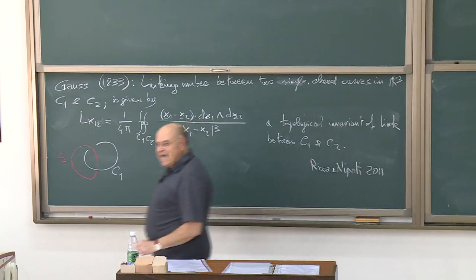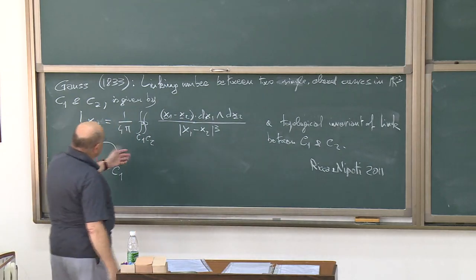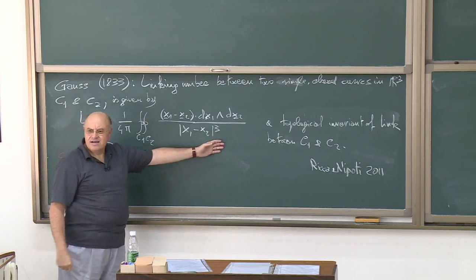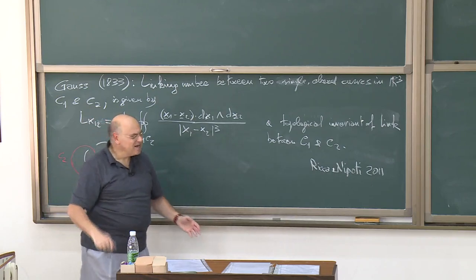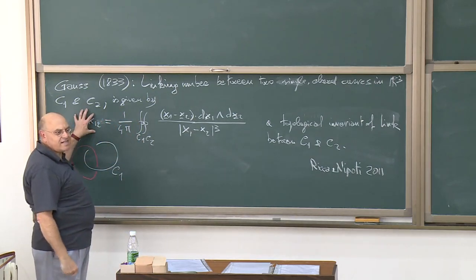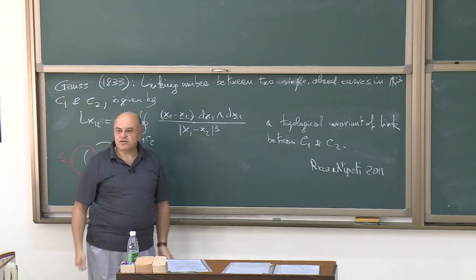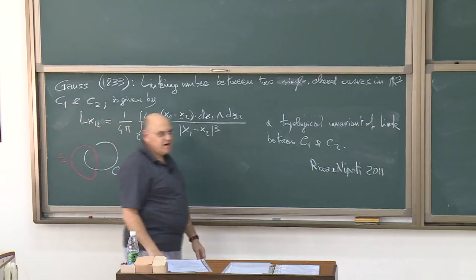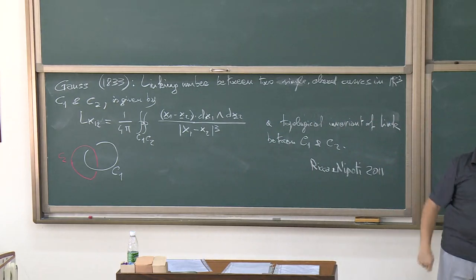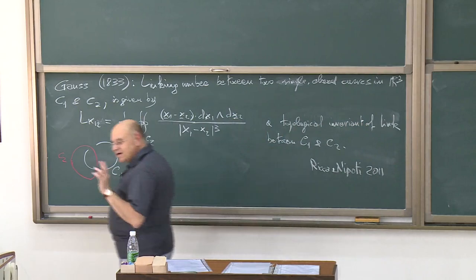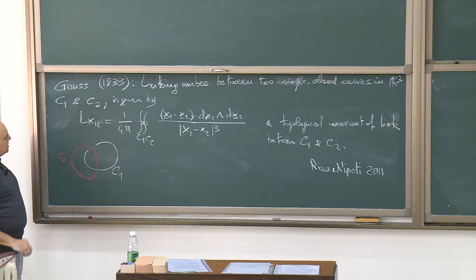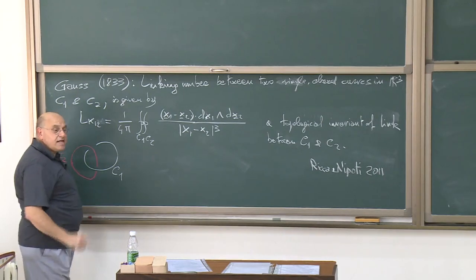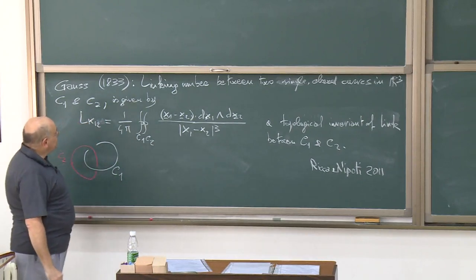The story behind this is very interesting. I wrote a paper on this with Nipoti, I think in 2011, stimulated by so many attempts people made to justify this formula. We reconstructed this formula from the work of Gauss — many people report how he derived possibly this formula, and it is absolutely impossible by the basis of what people claim. But if you go to Gauss's work and study his work on geomagnetism, then you understand how he gets to this formula.